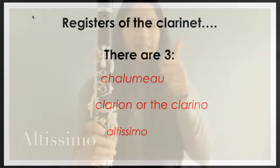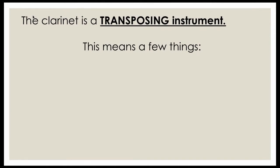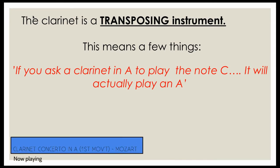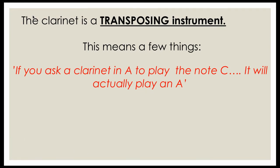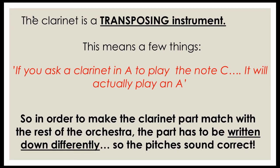Now I'd like to look at the idea of transposing instruments. If you don't play a woodwind or brass instrument, you might not know what this means. When we talk about a clarinet, we normally refer to a clarinet in A, or it could be a clarinet in B flat, or even a clarinet in C. If you ask a clarinet in A to play the note C, the sound that comes out will actually be in A. So in order to counteract that, you have to change the way the music is written down to match the rest of the orchestra.